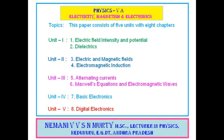Unit 4 has 2 chapters: the 7th is Basic Electronics. Unit 5 has 2 chapters: the 8th is Digital Electronics. So Physics 5A has 5 units and 8 chapters in total.